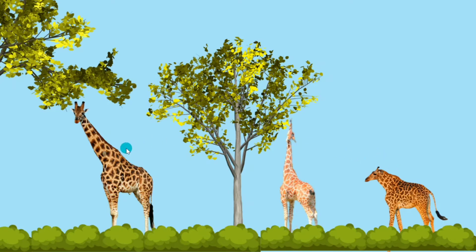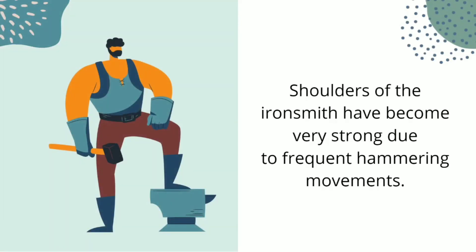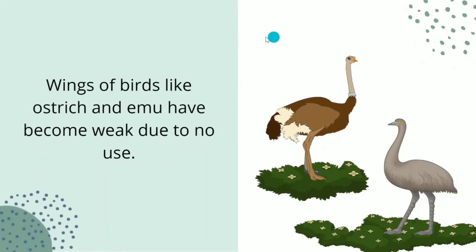The short neck of the giraffe is now elongated, and this never happened in a single generation — it took several generations to achieve this morphological change. Based on the activity the giraffe was performing, its neck got elongated. Another example is of the iron smith: the shoulders of the iron smith have become very strong due to frequent hammering movements, because of which the shoulder and arm muscles have become broad and strong through usage.